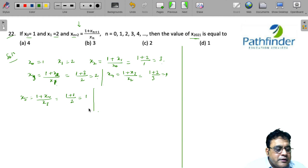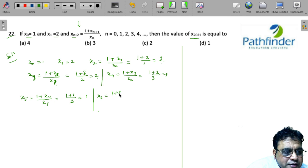What next? We need to calculate x₆, which is 1 plus x₅ upon x₄, which is 1 plus 1, 2 upon 1, which is 2.